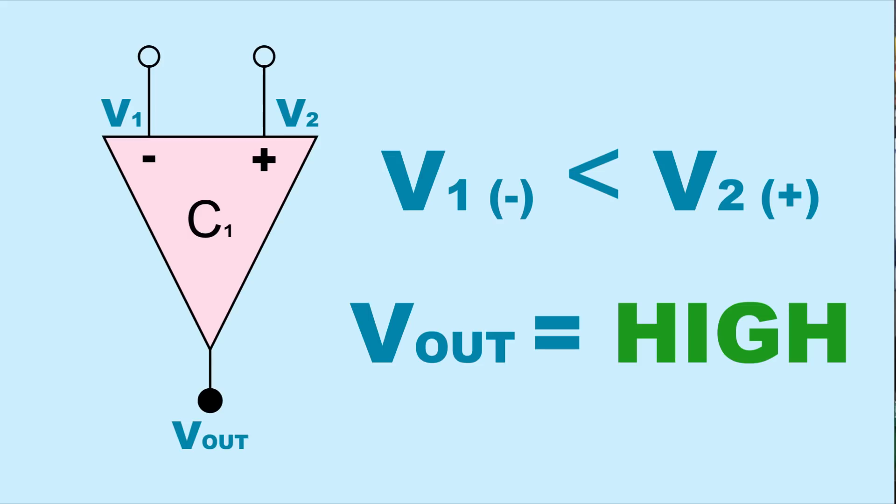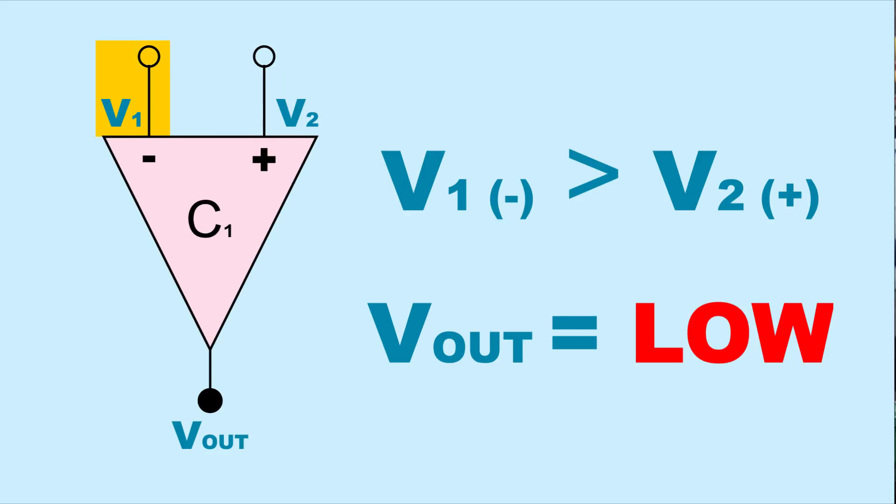Inside the 555, pins 2 and 6 are each connected to a comparator. A comparator is a device that has two inputs. Of the two, if the positive input has a higher voltage, the comparator will output high. If the negative input has a higher voltage, the comparator will output low.